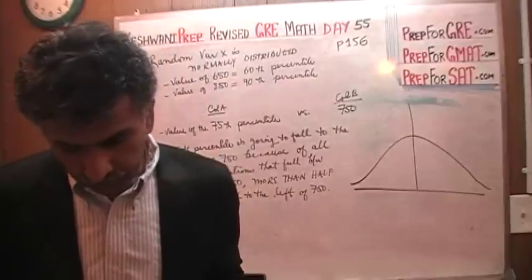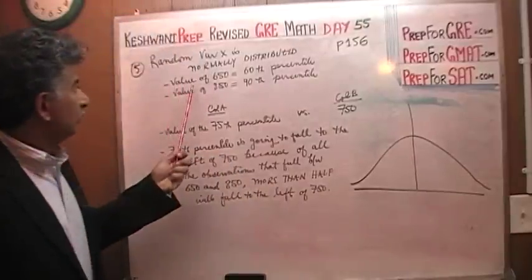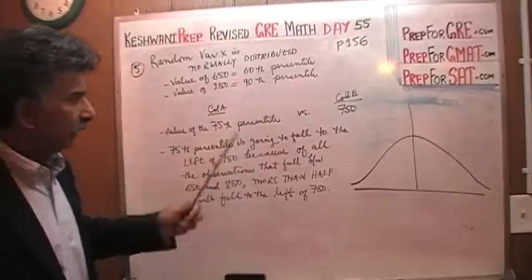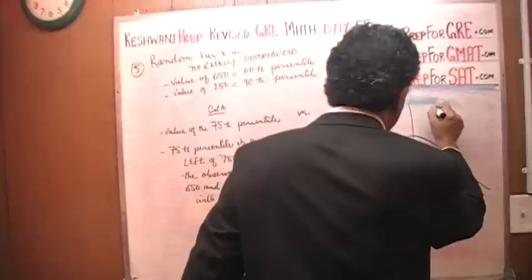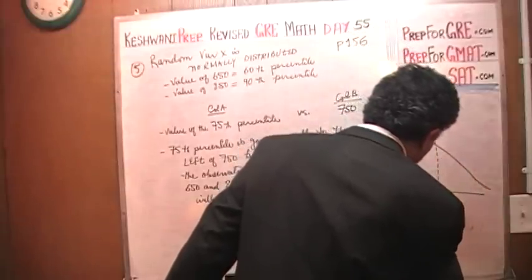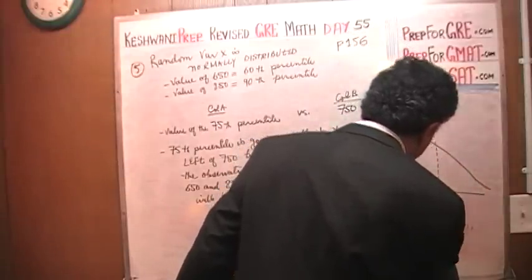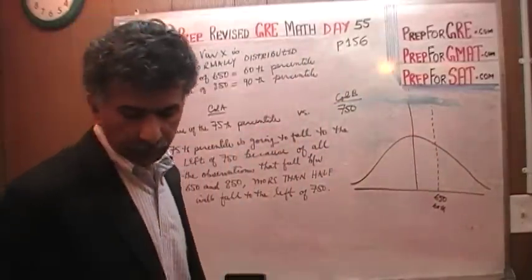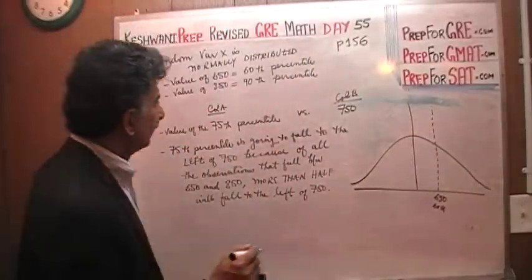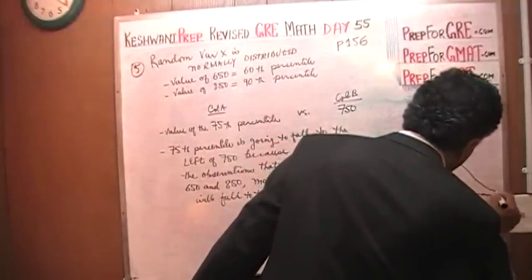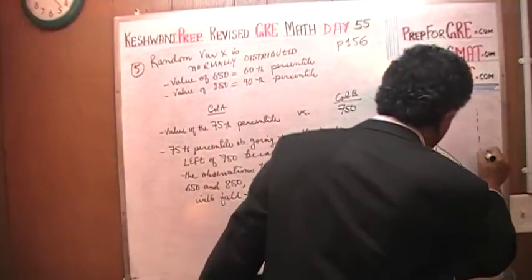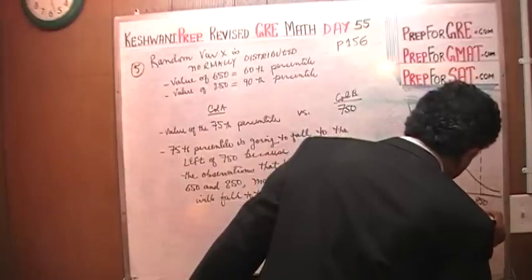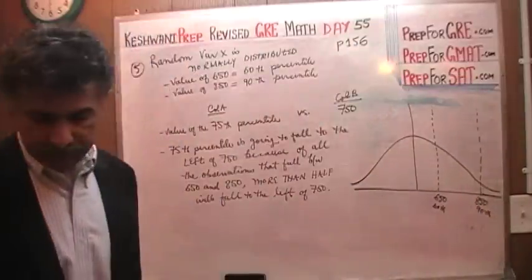What else do we know? We know that the value of 650 occurs at 60th percentile. So let's show that here, 650 at 60th percentile, somewhere here. We are also told that the value of 850 happens at 90th percentile. So that part is given to us.